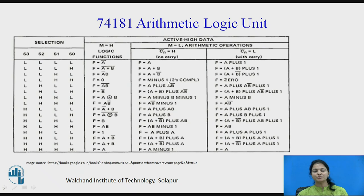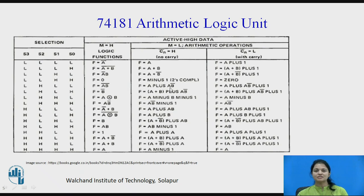With the combination low, low, high, high, we can also calculate the 2's complement, giving A minus 1. There are 16 combinations for selection, allowing 16 logic functions, 16 arithmetic functions without carry, and 16 with carry — a total of 48 arithmetic-logic functions.